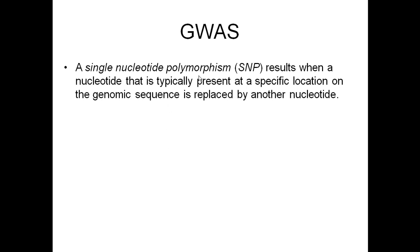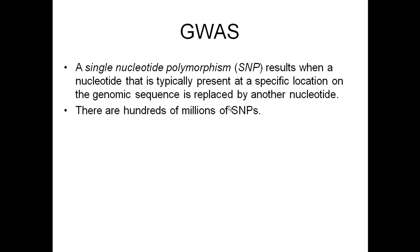A single nucleotide polymorphism, called a SNP, results when a nucleotide that is typically present in the genomic sequence is replaced by another nucleotide. We have millions of base pairs in our genome, and humans are identical on the vast majority of them — probably 99.9% plus. We have 98% of our genome in common with a chimpanzee and 90% in common with a mouse. SNPs are the places where we're different. To qualify as a SNP, there has to be a difference in either 1% or 5% of the population depending on who you're talking to. There are hundreds of millions of SNPs.